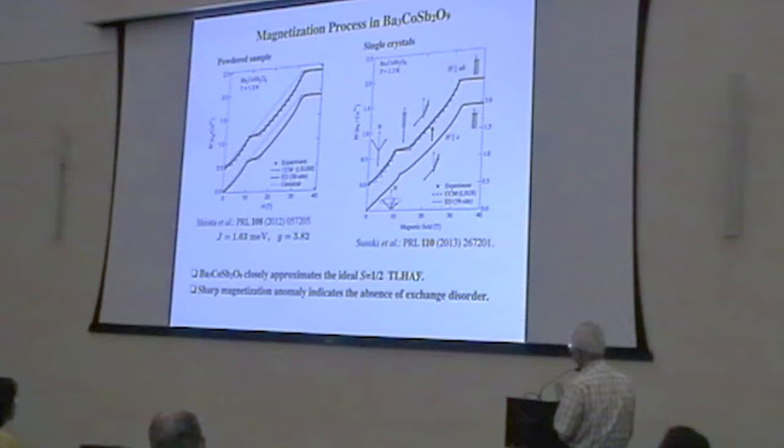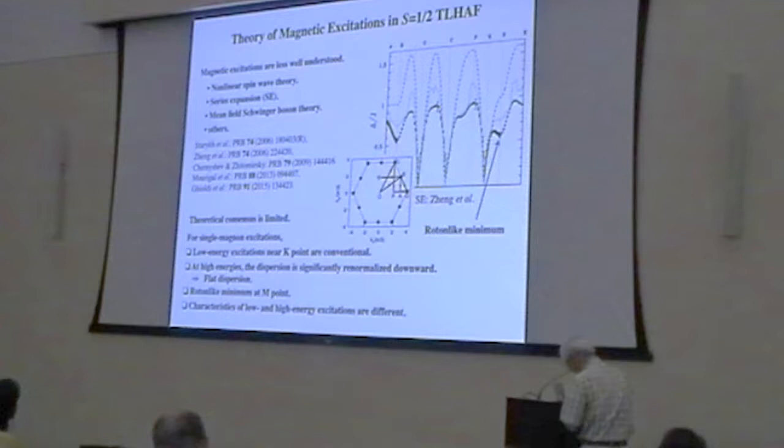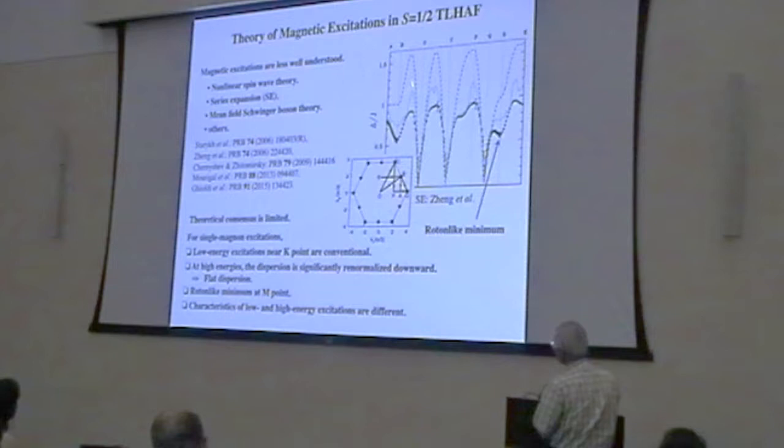From these measurements we see Ba3CoSb2O9 is close to the ideal spin one-half triangular lattice antiferromagnet. Sharp heat capacity anomaly indicates an exceedingly weak first-order transition.